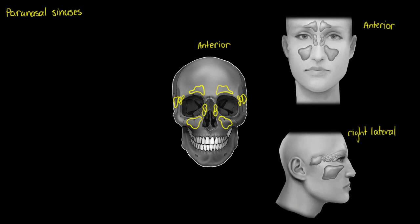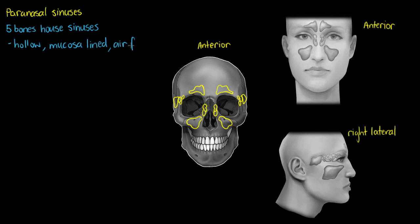The first mistake you want to avoid making when talking about the sinuses is thinking that they are part of the nose. They're not part of your nose — they are part of five separate bones of your skull. There are five bones and they each house sinuses. The sinuses themselves are hollow and lined with a mucosa, and they're also going to be filled with air — unless there's an overproduction of mucus from that mucosa lining, which is a membrane capable of producing mucus.